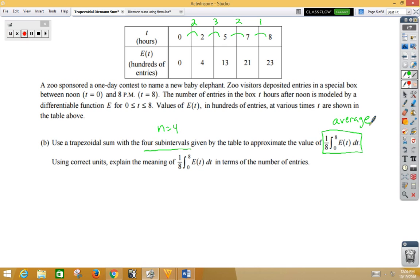Let's do that first. Explaining the meaning, that's the average number of entries during the time period 0 to 8, or from noon to 8 PM, of the number of entries in hundreds for the contest. Now let's go ahead and do our trapezoid.